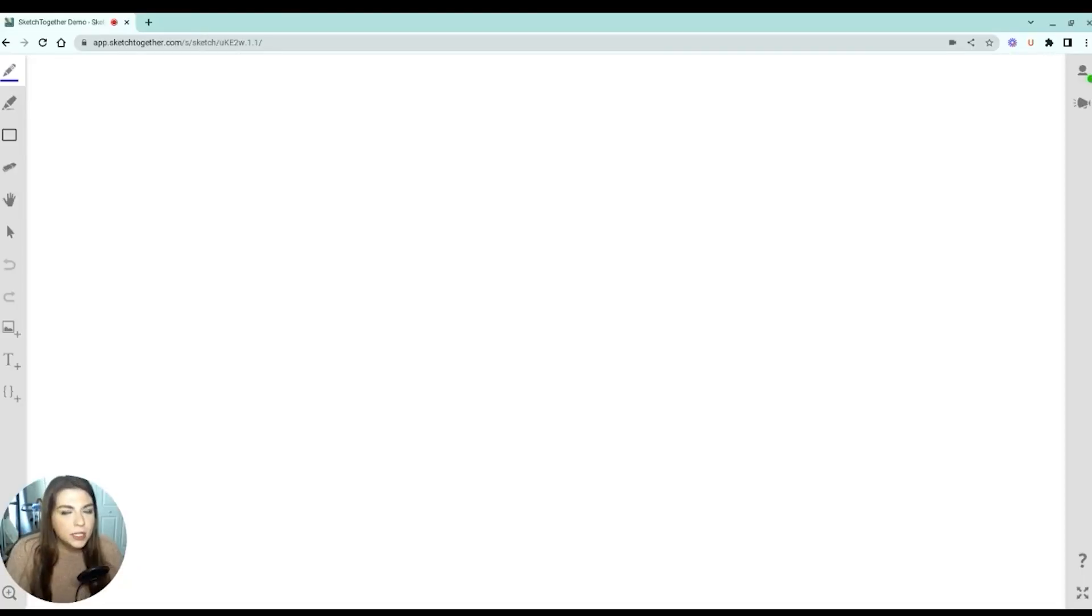All right, here we are doing the calculations for that molarity lab. So the first thing that we need to do is determine the molar mass of the Kool-Aid, and we're going to assume that it is 100% sucrose, meaning that this is our chemical formula, C12H22O11.